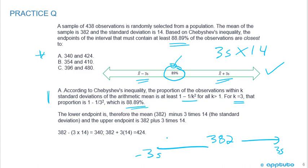negative 3 standard deviations. And what we're going to do is we're just going to subtract 3 times 14, and we're going to add 3 times 14. And that's going to give us the 382 plus 3 times 14 is 424, and 382 minus 3 times 14 is 340.